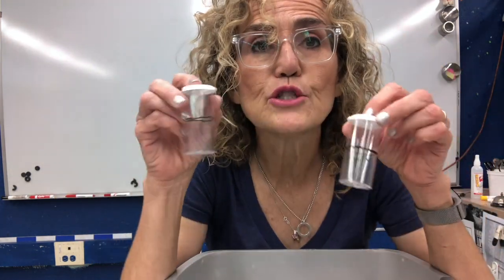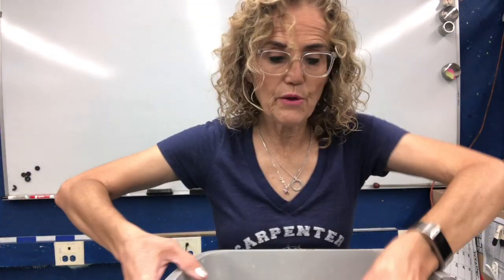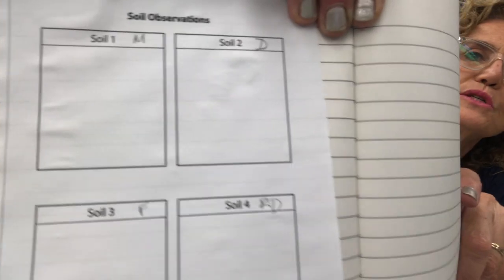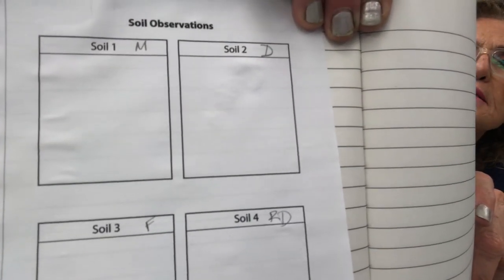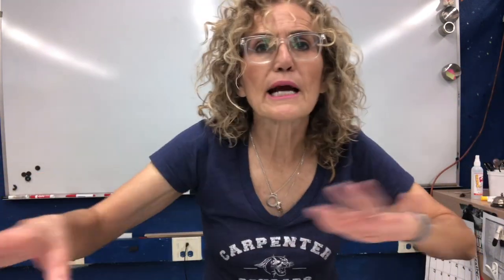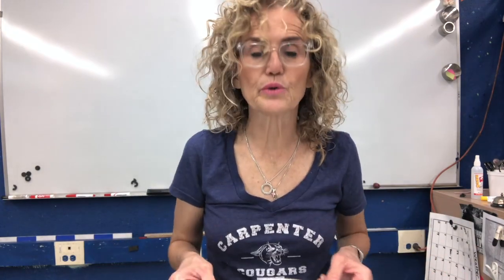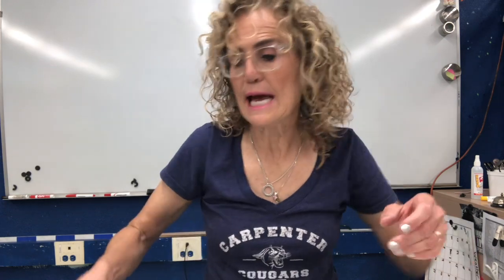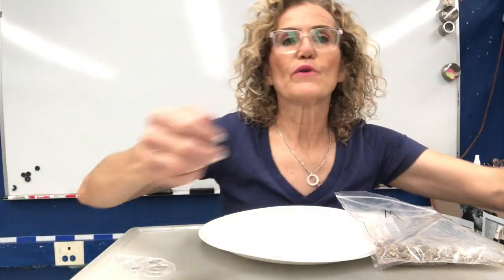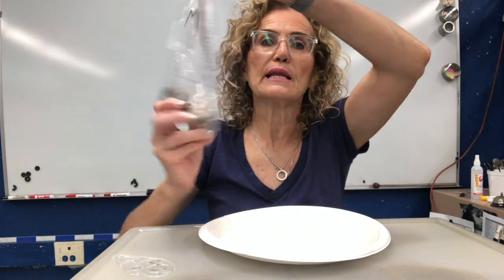We are also going to take out these two vials. In your science notebook, I want you to label each one — one, two, three, four — with these letters. Soil number one is M, soil number two is D, soil number three is F, and soil number four is RD. When you open the materials, make sure you label the paper plates with the letter of each one so you don't forget which material is which, because we're going to compare them against each other.